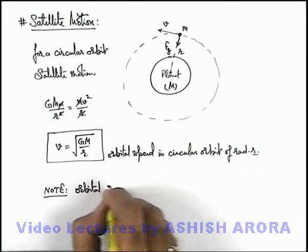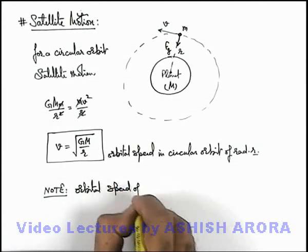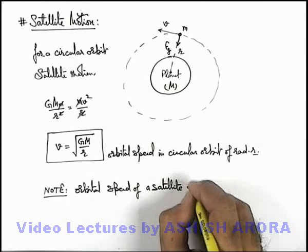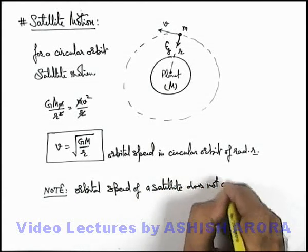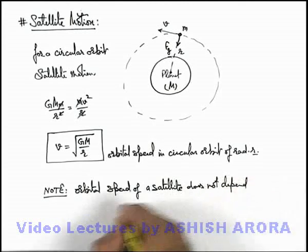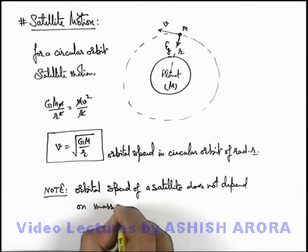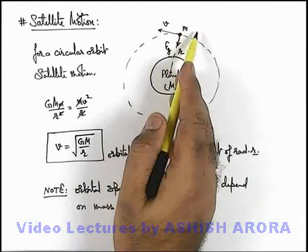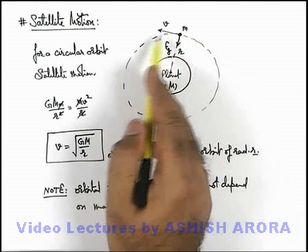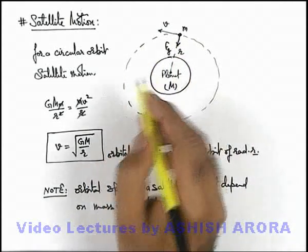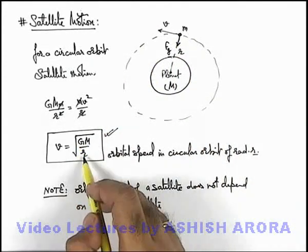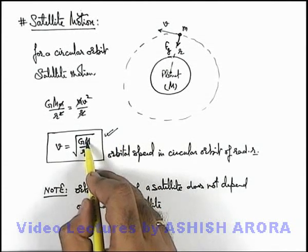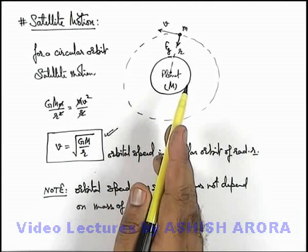Orbital speed of a satellite does not depend on mass of satellite. Whether the satellite is heavy or light it won't make any difference if it is to revolve in an orbit of radius r. Its speed is given by root of G M by r. It depends on the orbital radius as well as the mass of the planet around which it is revolving. It does not depend on the mass of satellite.